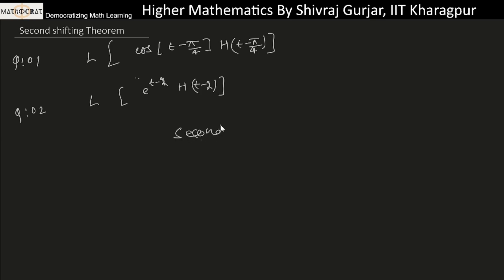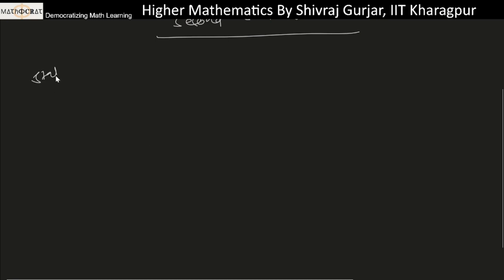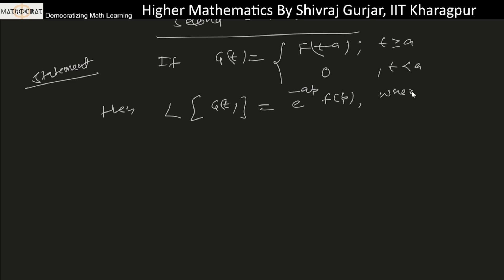The second shifting theorem, or translation theorem. The statement says: if g is defined as f(t-a) for t greater than or equal to a, and 0 for t less than a, then the Laplace transformation of g(t) is given by e^(-ap) F(p), where F(p) equals the Laplace of f(t).